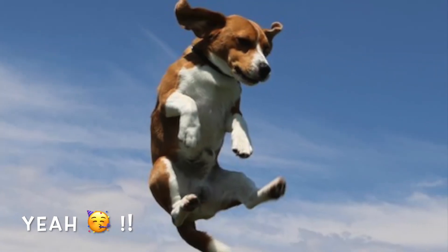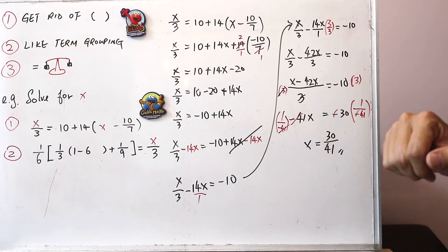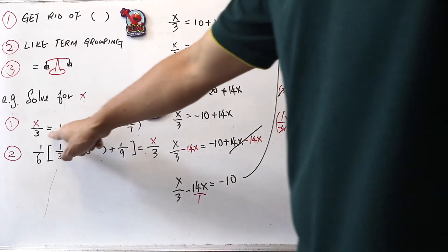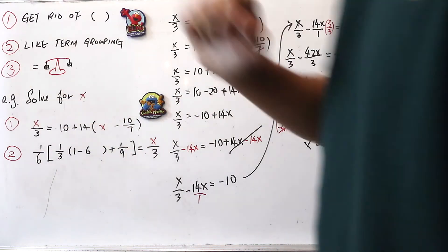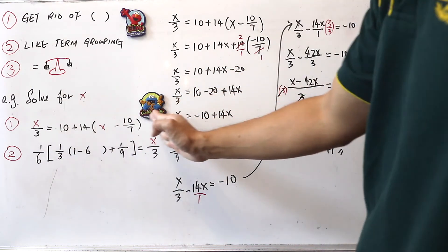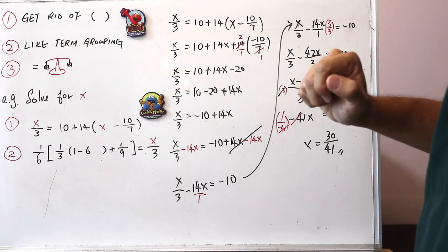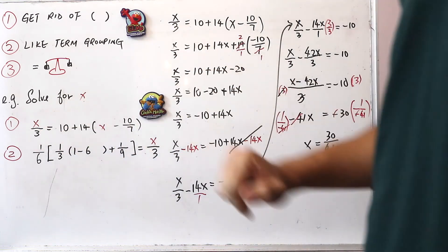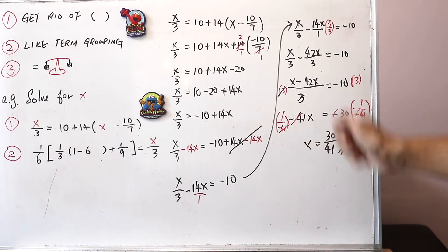The answer is x equals 30 over 41. To verify, if your teacher allows a calculator, plug 30 divided by 41 into the left-hand side of the equation, record the result, then compute the right-hand side with the same value. If both sides are equal, then x equals 30 over 41 is confirmed as the correct answer.